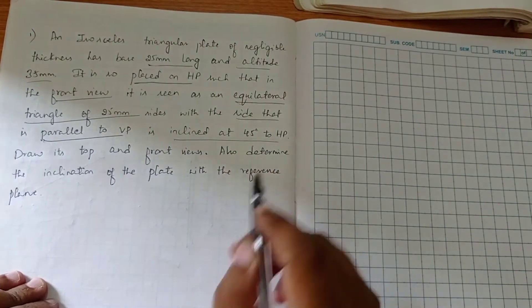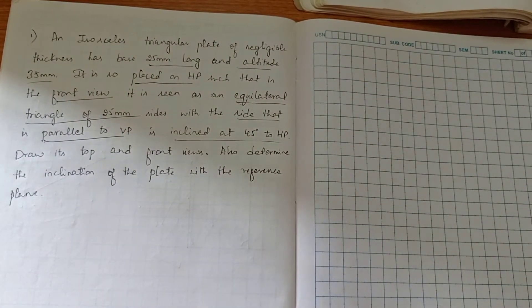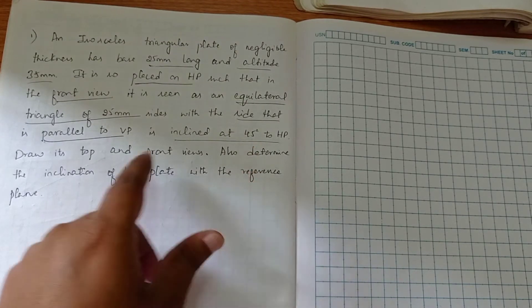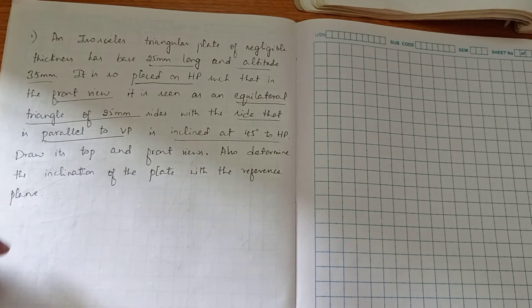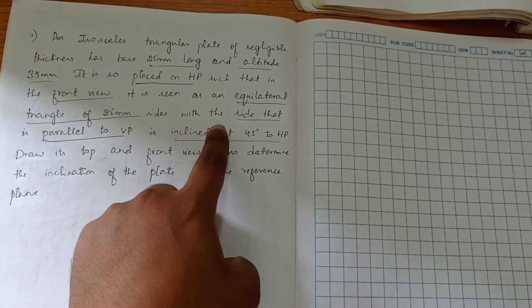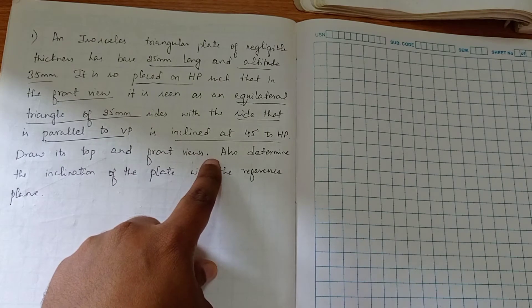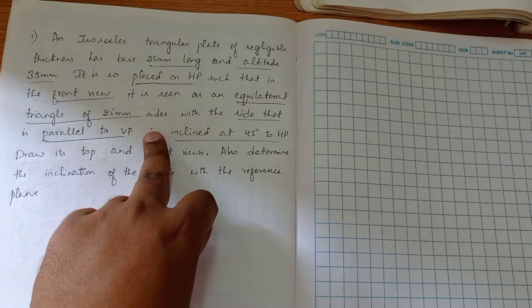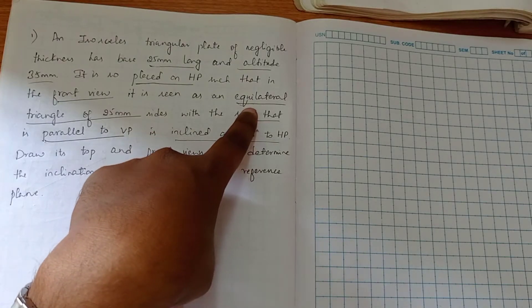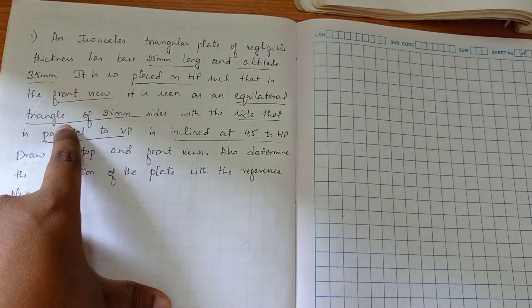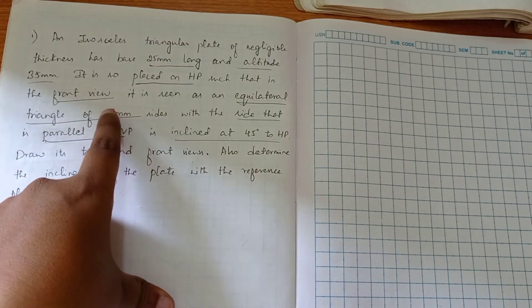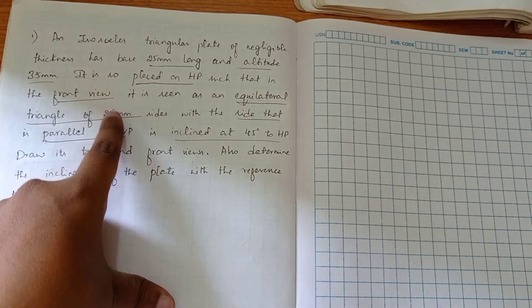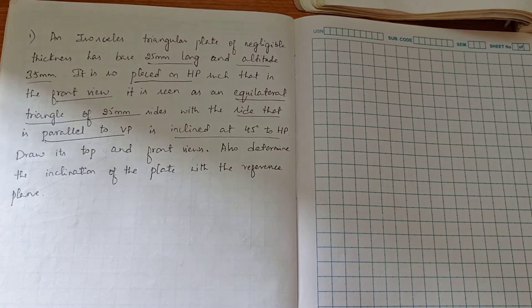The side parallel to VP is inclined at 45 degrees to HP. In this question, only one angle of inclination is mentioned — 45 degrees to HP. The second angle of inclination to VP is not mentioned; instead, they specify the second view — in the front view it is an equilateral triangle of dimension 25. So we have to get an equilateral triangle in the front view.